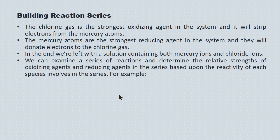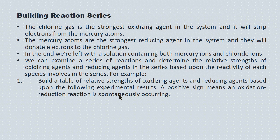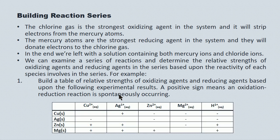We can examine a series of reactions and determine the relative strength of oxidizing and reducing agents based on the reactivity of each species involved. Here's an example where we're given a series of experimental results. We're mixing oxidizers and reducers, some are reacting positively and some aren't reacting at all. Our job is to take these experimental results and build a table of relative strengths of oxidizers and reducers, much like the table in your data booklet.